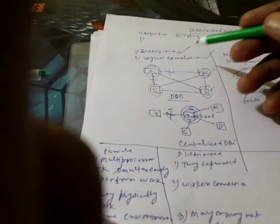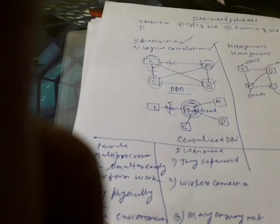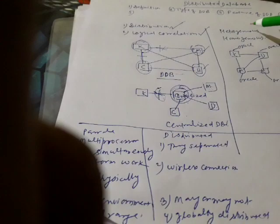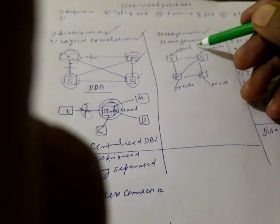So the definition of a distributed database is: data is distributed at different locations and, using network topology, they are logically correlated with each other. Now let's look at the types of distributed database — there are mainly two types: heterogeneous and homogeneous.